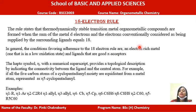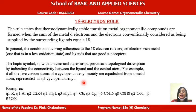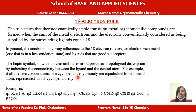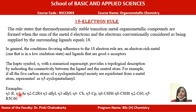In this 18 electron rule, the most important ligand to study is the hapto-symbol ligand, denoted by the eta symbol. The most common example is eta-5-cyclopentadienyl. The superscript of eta actually denotes the number of carbon atoms in that ring which can donate electrons. There are some other examples of hapto ligands as well.